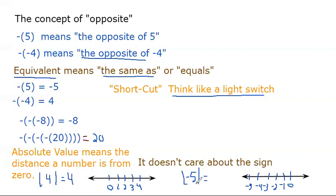The absolute value of negative five means how far is negative five from zero. If here's zero and here's negative five, you count from zero: one, two, three, four, five. So the absolute value of negative five is the same as a positive five, because distance is always a non-negative number. It can be zero or a positive value — it doesn't care about the sign.